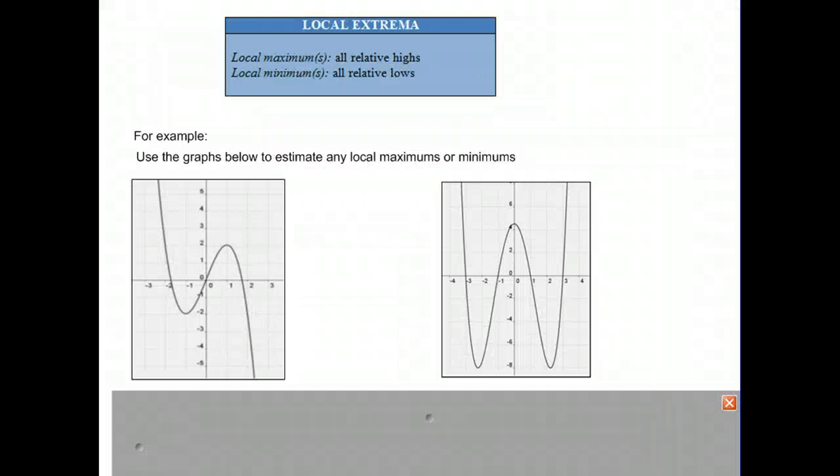Next, we're talking about the local maximum and local minimum. These are all relative. For example, a local maximum in our first graph on the left is right here at the point 1, 2. Within a certain interval, we get to a high point, and that's why it's called a local maximum.